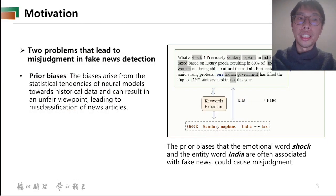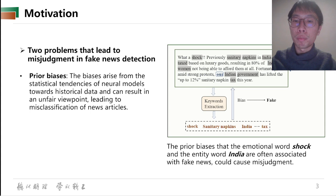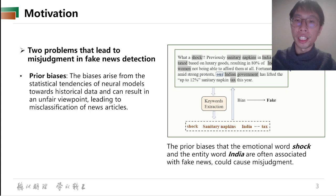The second is the periodic biases. These biases arise from the statistical tendency of neural models towards historical data and can result in an unfair viewpoint, leading to misclassification of news articles. For example, the periodic biases that the emotion 'war shock' and the entity 'war India' are often associated with fake news could cause misjudgment here.